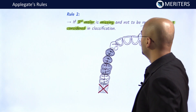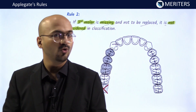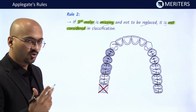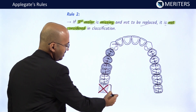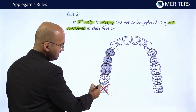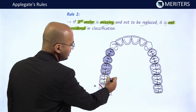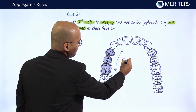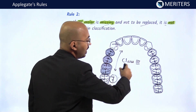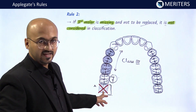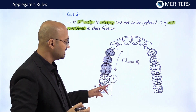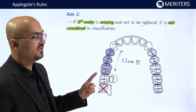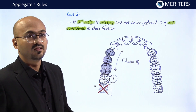Applegate's Rule Number 2: if a third molar is missing and not to be replaced, it is not considered in the classification. Third molars are normally not indicated for replacement because they don't have much masticatory efficiency. For example, if the third molar is extracted and not replaced, the second molar becomes the posterior-most tooth, making this Kennedy's Class 3. However, if the third molar were to be replaced, it would become Kennedy's Class 2 Modification 1.